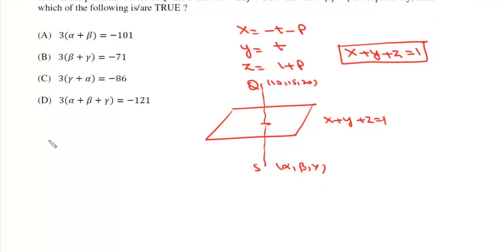So it will be (α-10)/1 = (β-15)/1 = (γ-20)/1 and it will be equal to -2 times (10+15+20-1) divided by √(1²+1²+1²), which is -2(44)/√3 = -88/3.